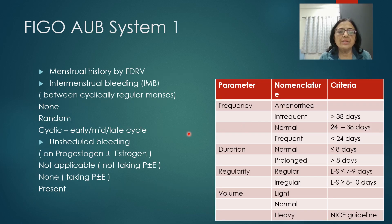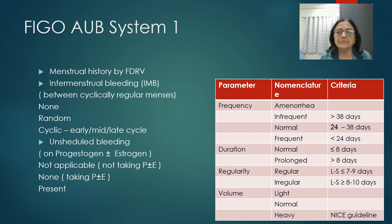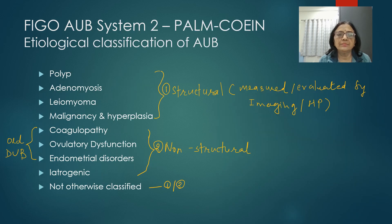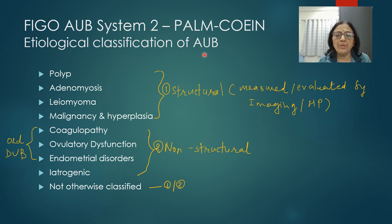We have already seen FIGO AUB System 2 in part 1, which focused on how we take menstrual history by FDRV, intermenstrual bleeding, and unscheduled bleeding. Today we will see FIGO AUB System 2 — that is PALM-COEIN — which is an etiological classification of abnormal uterine bleeding.